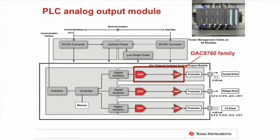Here is a block diagram for a PLC analog output module. The backplane on the left interfaces to the field instruments on the right through this PLC analog output module. There is an interface component going through a digital controller, through a layer of isolation, which then talks to the digital-to-analog converter. The predominant component on this module is the DAC, which sets the performance. The DAC typically interfaces with the amplifier, and together they interface to the field equipment with either a current output or a voltage output.